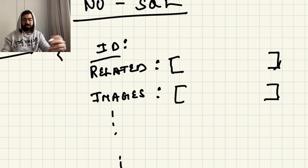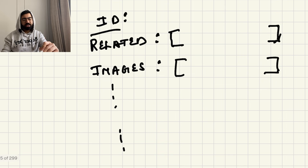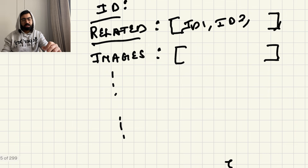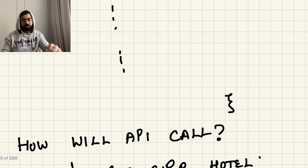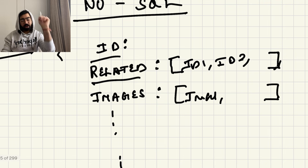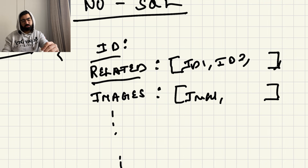What should the metadata store be — SQL or NoSQL? Our use case involves linkage between hotels: when we show a hotel page we also want to show related hotels' images, so there is a relationship between entities. Let's first consider NoSQL — in NoSQL the format is JSON, where an ID maps to related hotel IDs. But joins are not possible in NoSQL databases, so images of the hotel are stored as a list.